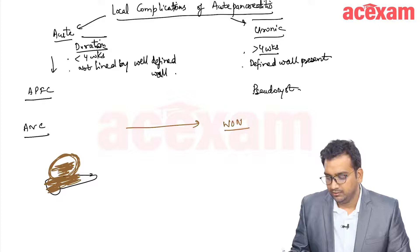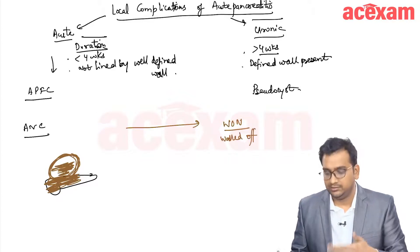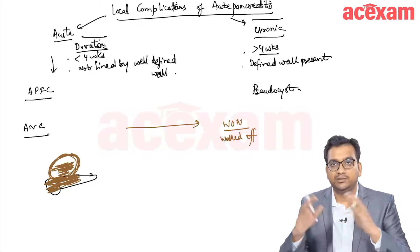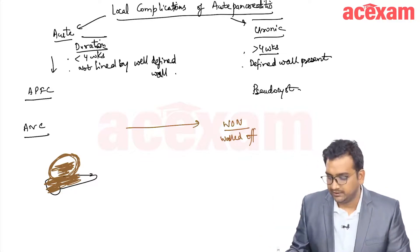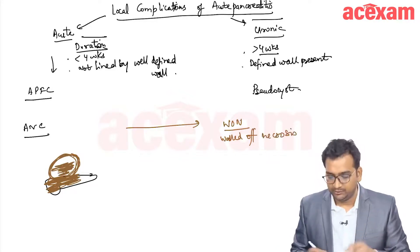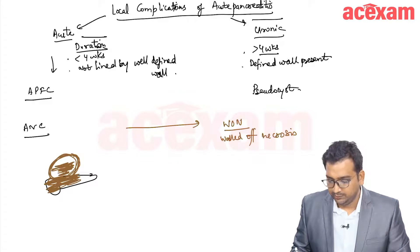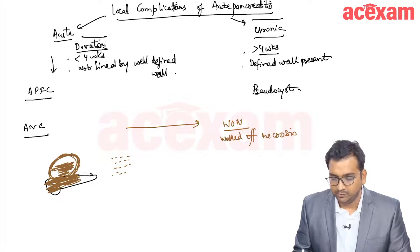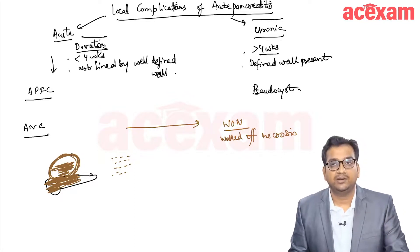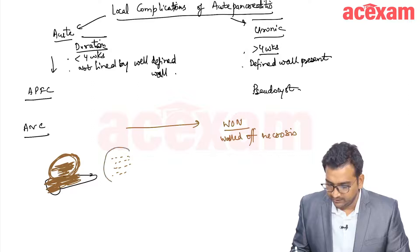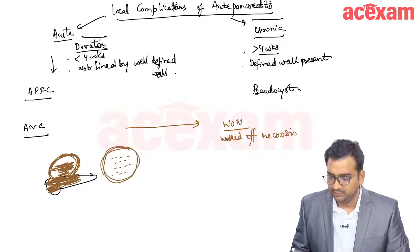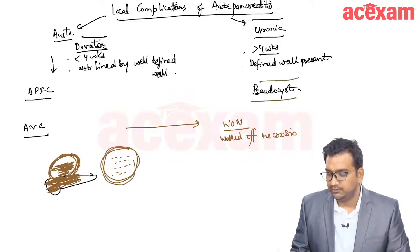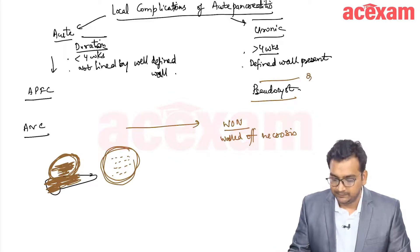Walled-off necrosis has a wall which is encapsulating or covering the necrotic collection. On the other hand, if there is no necrosis and there is only fluid, then that is acute pancreatic fluid collection. If this fluid becomes lined by a covering, it will become a pseudocyst later on.